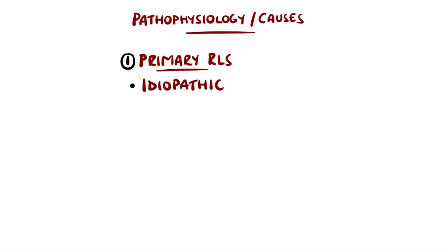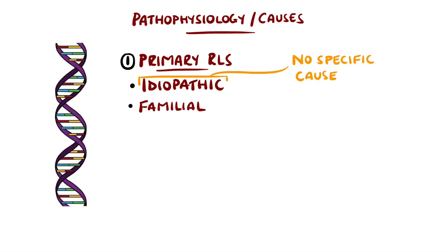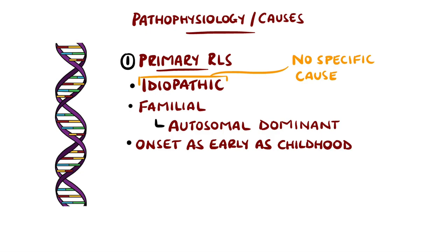Restless Leg Syndrome is divided into primary and secondary, where primary is mostly idiopathic, meaning there is no apparent cause. It is thought to be familial in many cases and tends to be inherited in an autosomal dominant pattern. These patients are more likely to be affected earlier in life, even as early as childhood. It can demonstrate genetic anticipation, which is where the age of onset gets younger through each generation.